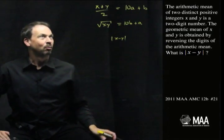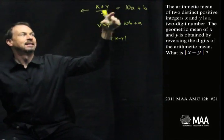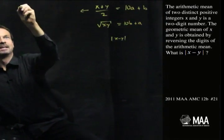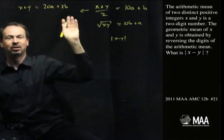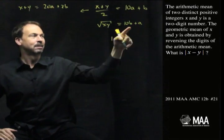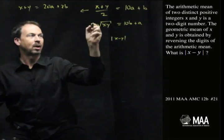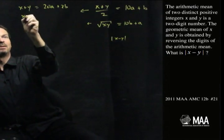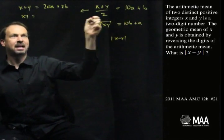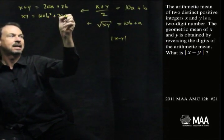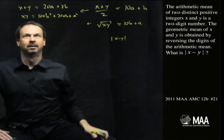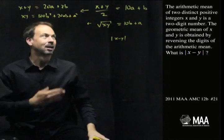It feels absolutely compelling to double this equation, so x plus y equals 20a plus 2b. It also feels compelling to get rid of the square roots. Let me square this equation and write xy equals 10b plus a squared, so it's 100b² plus 20ab plus a². Don't know if it's helping. I'm just doing something.